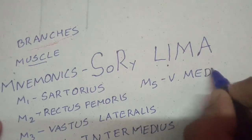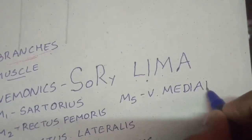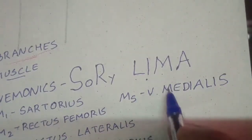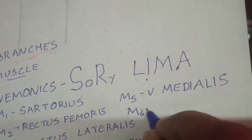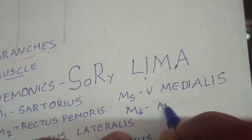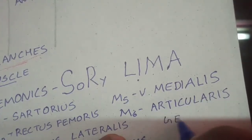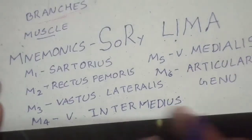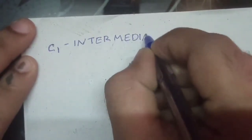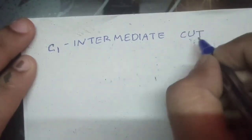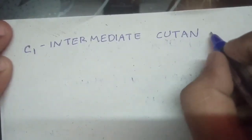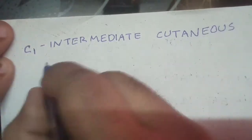M6 is articularis genu. So M1 through M6 covers all the muscular branches. For the cutaneous supply, C1 stands for the intermediate cutaneous nerve of the thigh.